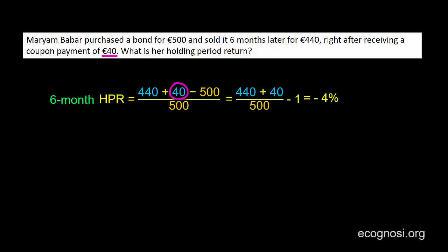So our investor realized a loss. In the previous example, where we dealt with the stock, there were no interim cash flows, so the holding period return was only a function of the change in the price of the stock. Since the stock appreciated in value, the holding period return was positive. If Elish Mahoghar had received a dividend, that would also be included in the calculation as part of the end of period value. Before I close this video, I'd like us to see what the holding period return would be in this example if there were no interim cash flows — I would like you to pause the video right now and do the calculation on your own.